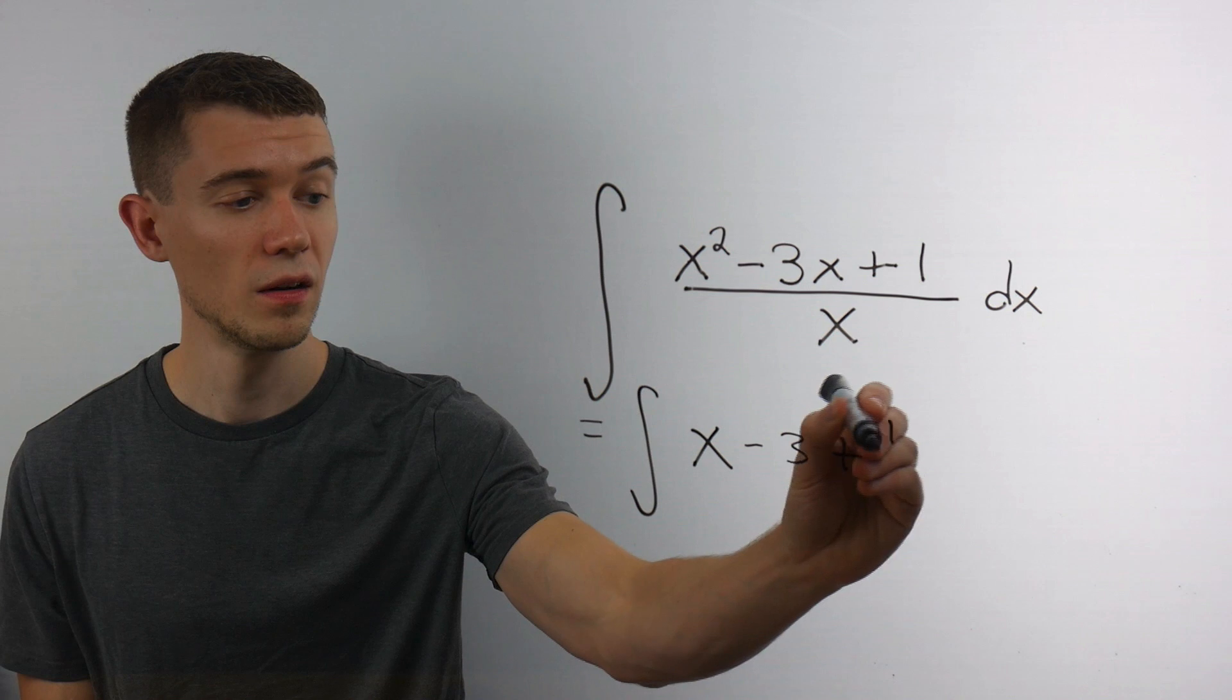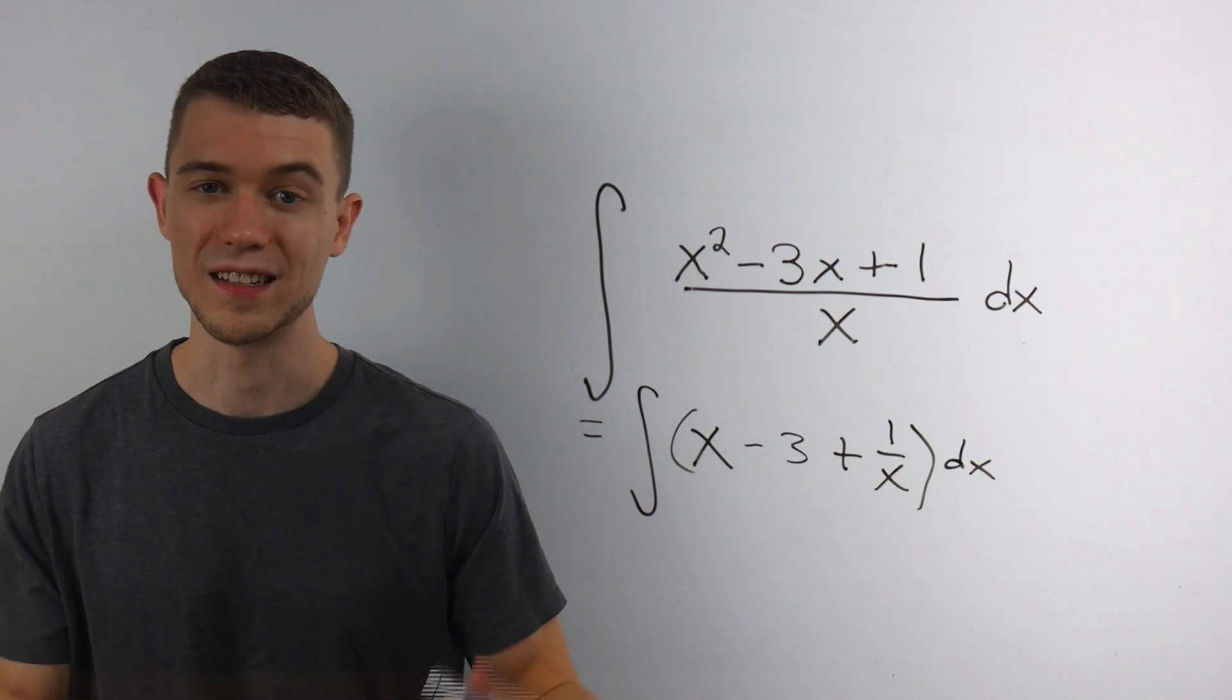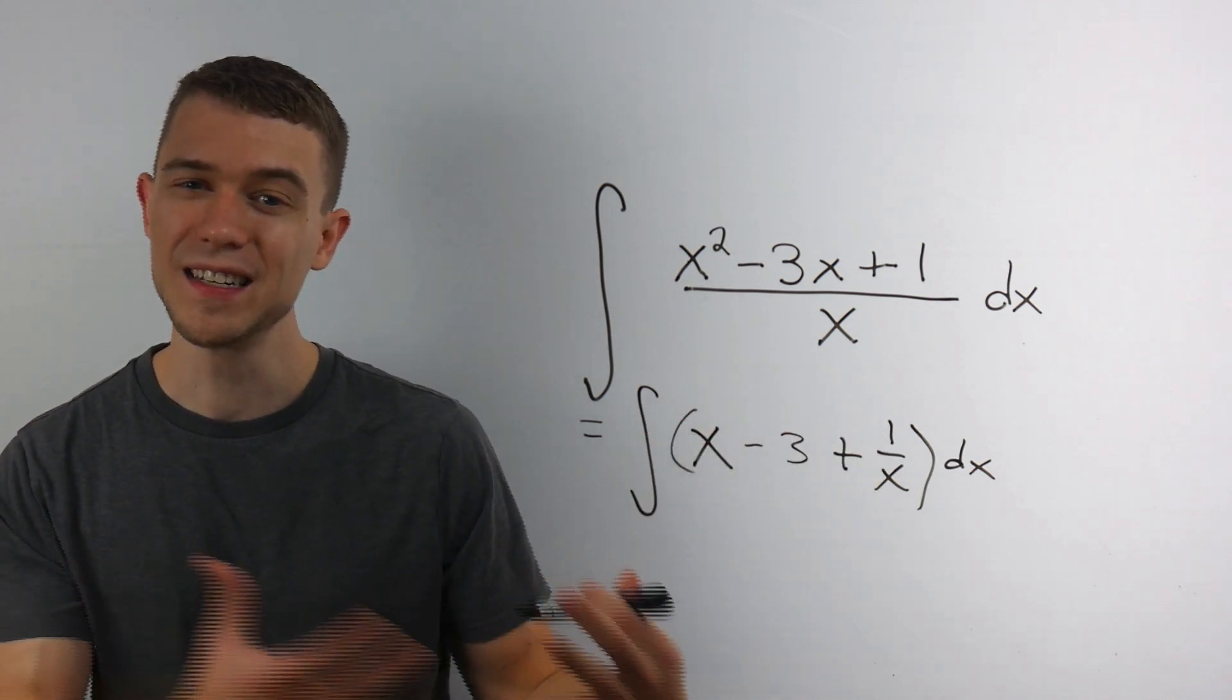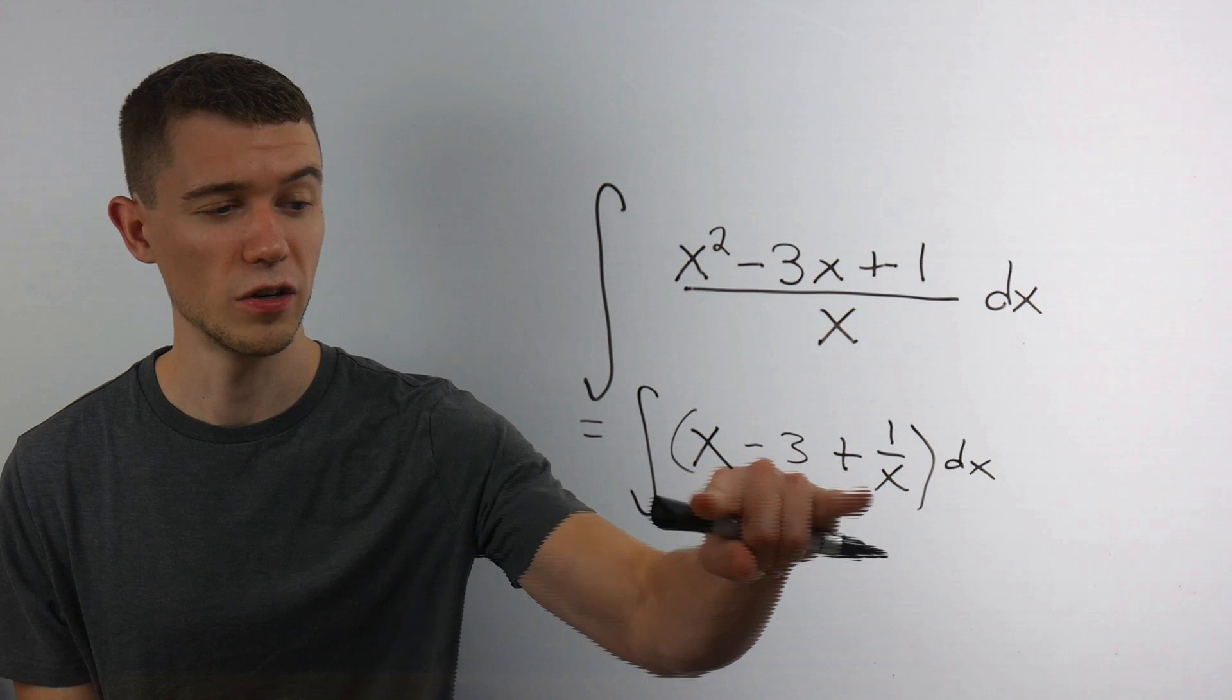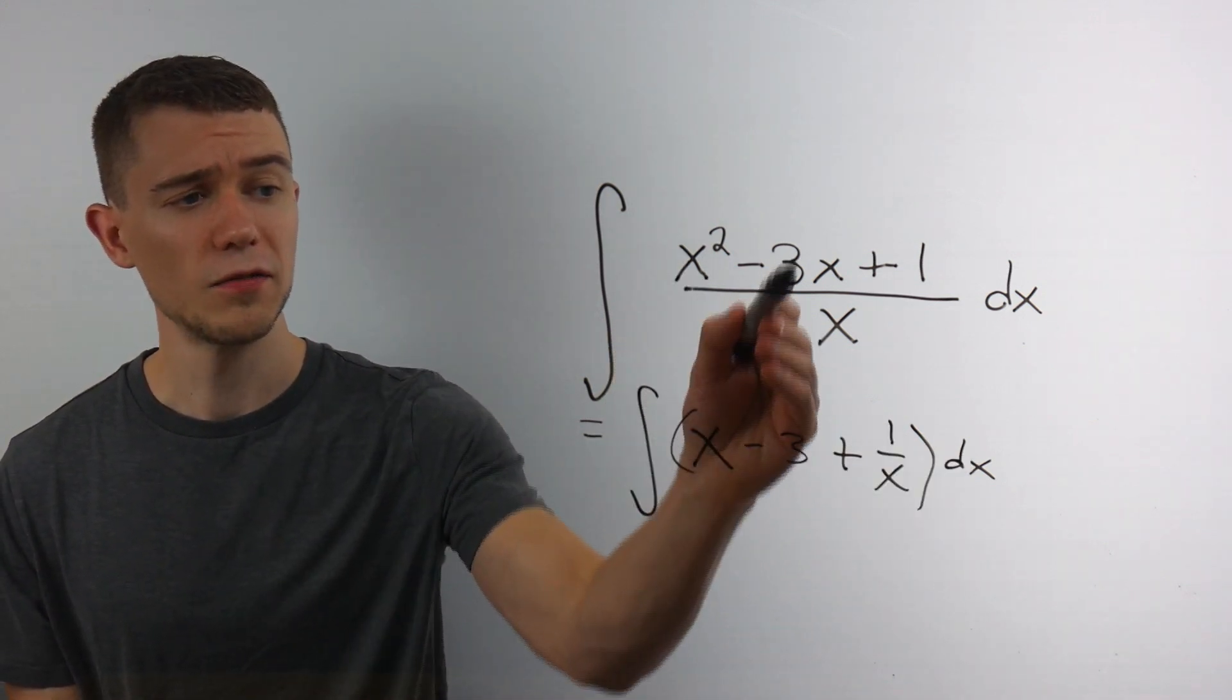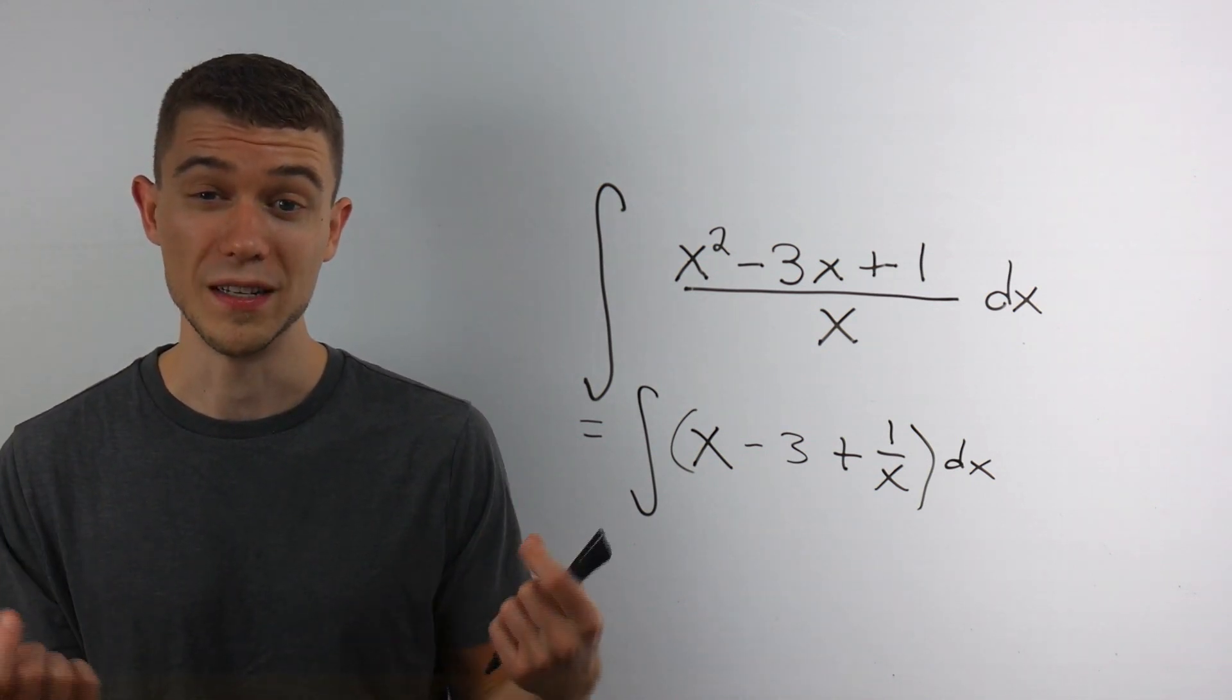We then have plus 1 over x, and this is all times dx. Sometimes people will drop this dx, they won't write the differential, or they won't put parentheses around it. It's not a huge deal, it's more of a notational issue, but some professors do get upset by that. So make sure you have parentheses and a dx there. All I did was split this fraction up and reduce those things. Now this is more in the form that you're used to seeing.